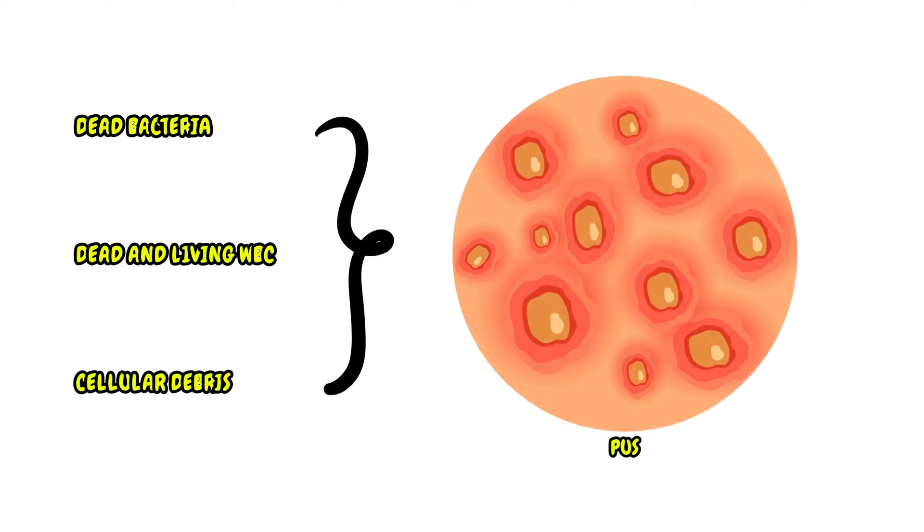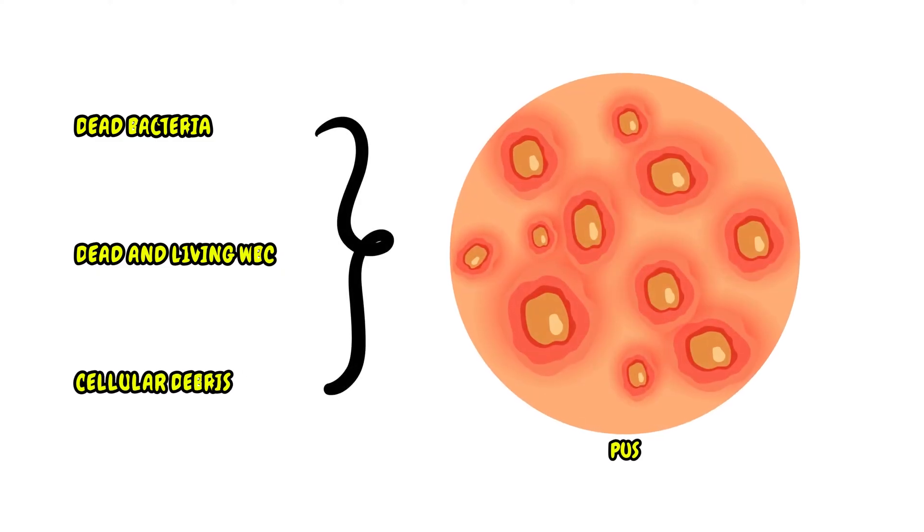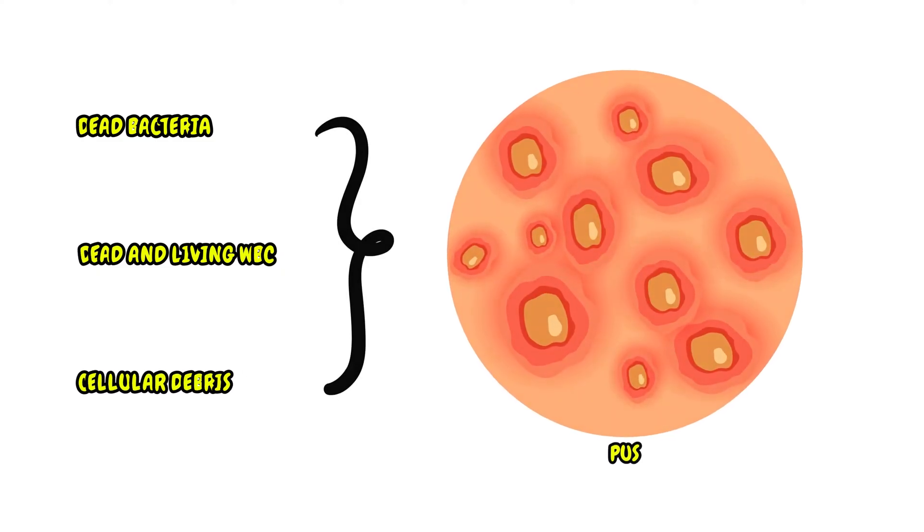The accumulation of dead bacteria, dead and living white blood cells, and cellular debris forms pus, which collects in the center of the furuncle.